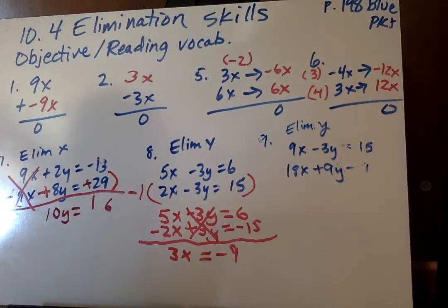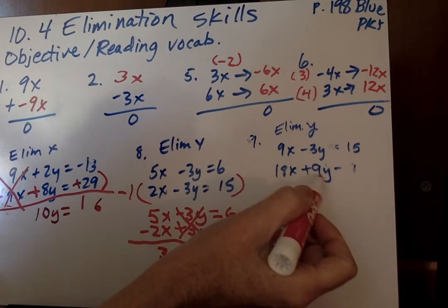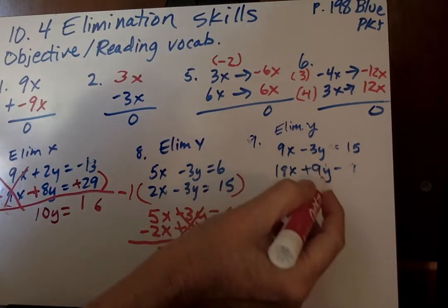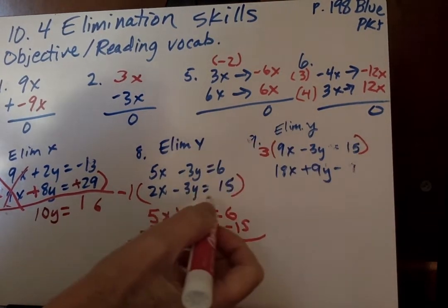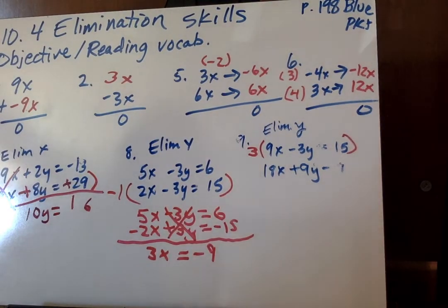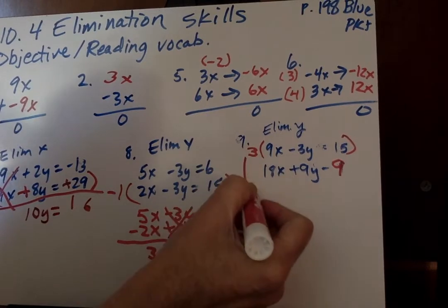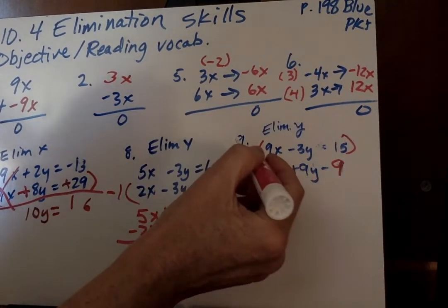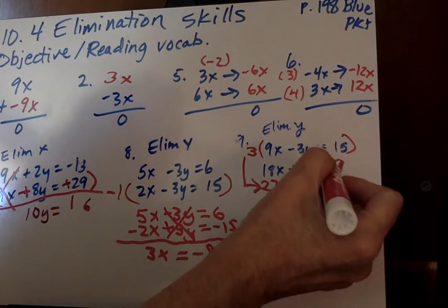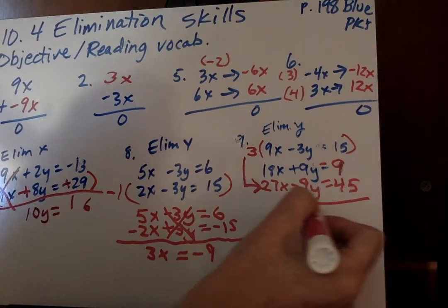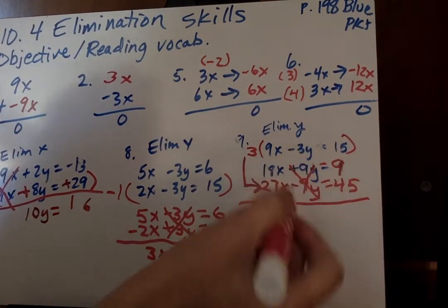Next we're going to go on to number 9 where it says eliminate y. Now we say, what's our least common multiple here? 9. We need that to be a negative 9y, so it's opposite of that one. So I'm going to take this whole thing and multiply it by 3, and it has to be multiplied by every term. That was 18x plus 9y equals 9. So I'm going to rewrite this one down here, and then I'm going to add the two equations straight down. 3 times 9 is 27x, 3 times negative 3y is negative 9y, and 3 times 15 is 45.